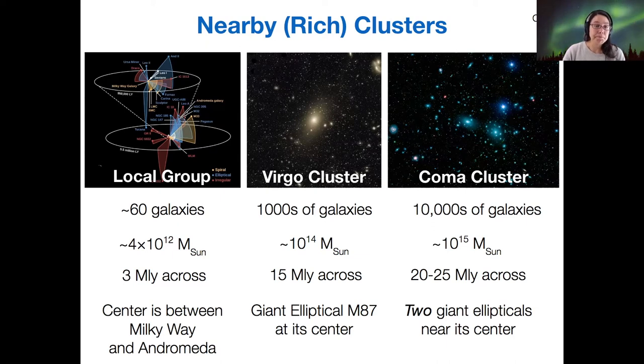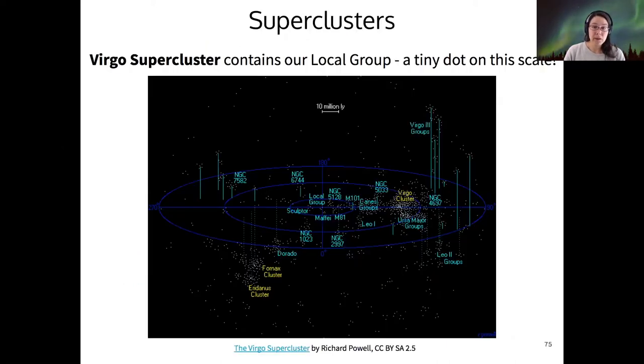The end of structure does not end with clusters—there are also superclusters. Here's the Virgo supercluster that contains our local group, which is just the tiny dot at the very center of this scale. Here's the Virgo cluster we just discussed.